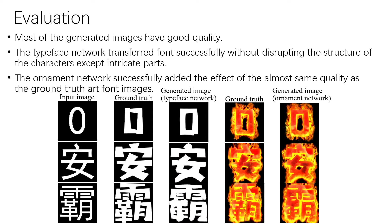The following are the evaluation of results. The first part is the evaluation of the generation of the proposed network. From the results, we can see that most of the generated images have good quality. The third column shows that the Typeface Network transfers the font successfully without disrupting the structure of the characters, except some intricate parts. The fifth column shows that the Ornament Network successfully added effects of almost the same quality as the ground truth art font images.